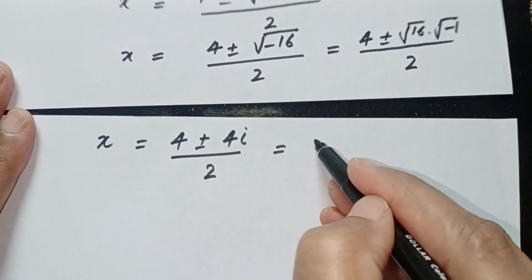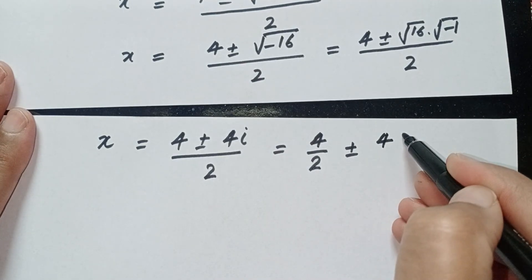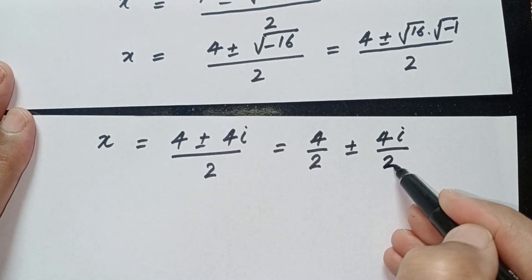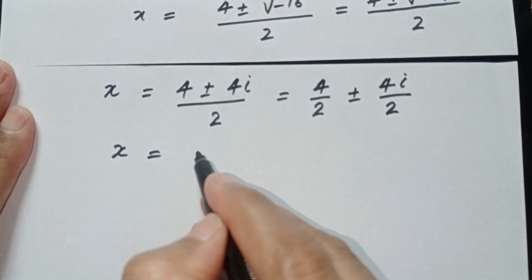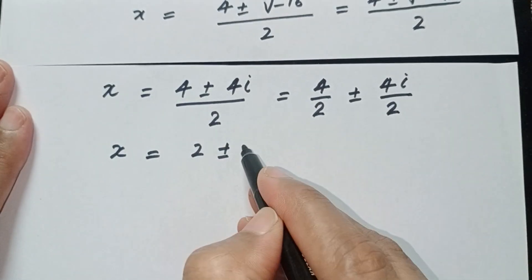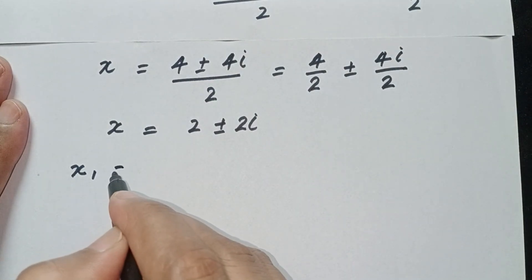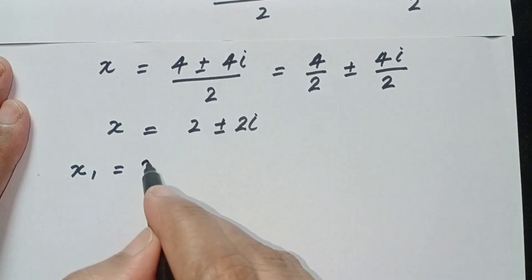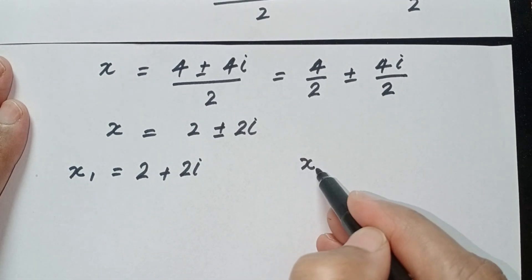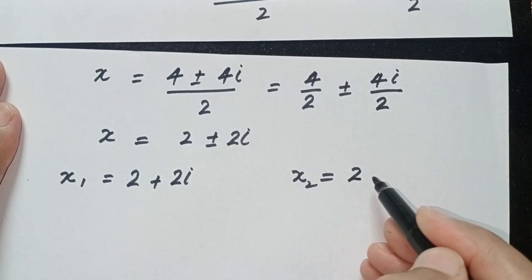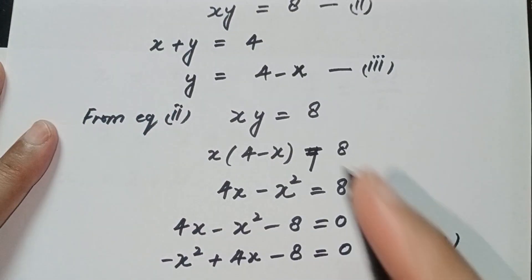Dividing through by 2, we get x is equal to 2 plus or minus 2i. So x₁ is equal to 2 plus 2i, and x₂ is equal to 2 minus 2i. Now remember equation 3: y equals 4 minus x.